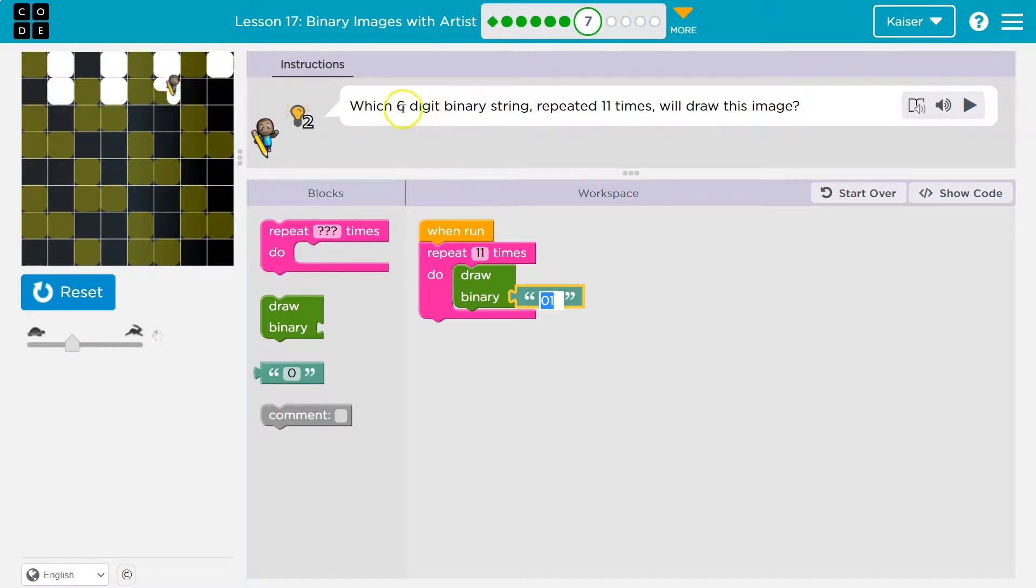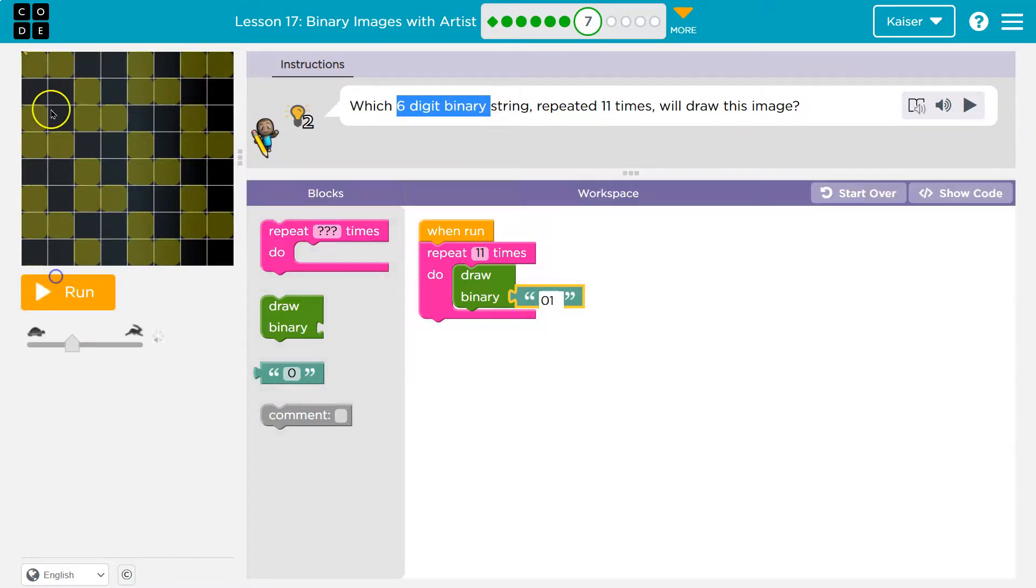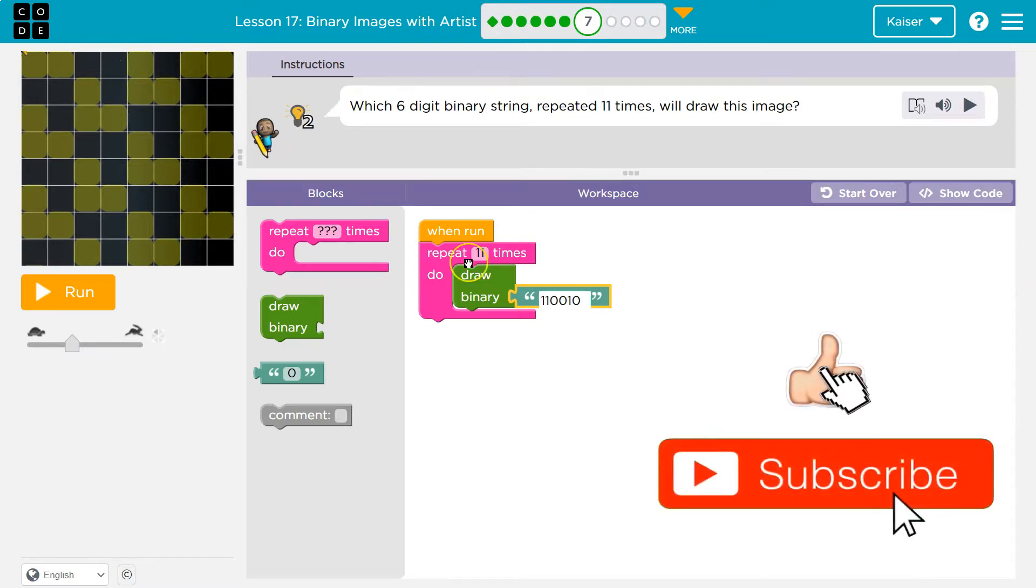So we need a six-digit string that will make it look like this. The yellow, I think, is where they want us to scratch. So it looks like scratch, scratch, right? Scratch a yellow, scratch a yellow. Skip. So we need 0. Skip again for this fourth one, 0. Looks like we need to scratch that. So 1. And then skip that.